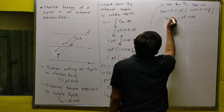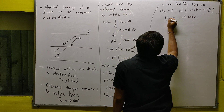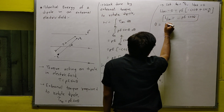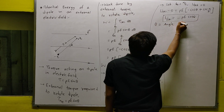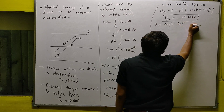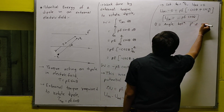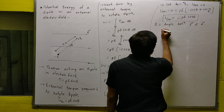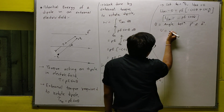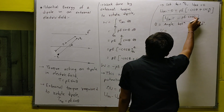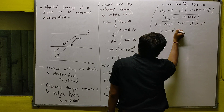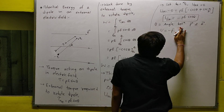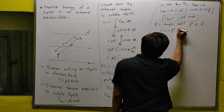This is the formula for potential energy of a dipole at angle θ, where θ is the angle between the dipole moment P and the electric field E. You can also write this formula in vector form: since AB cosθ = A·B, we have PE cosθ = P·E, so U = −P·E. This is the formula in vector form.